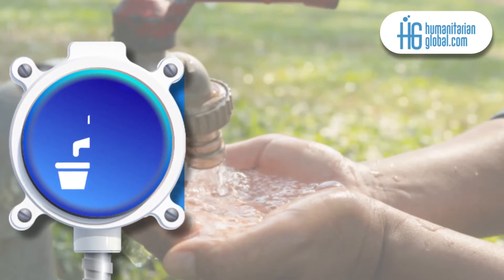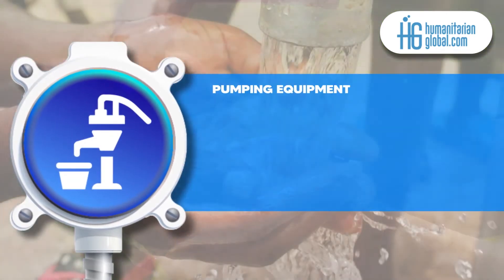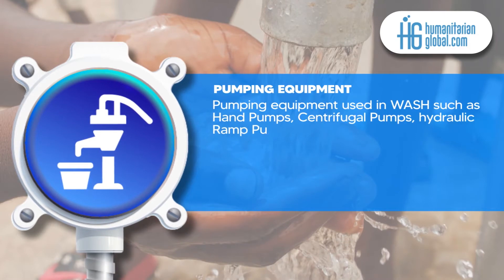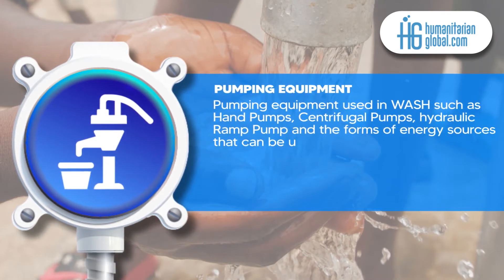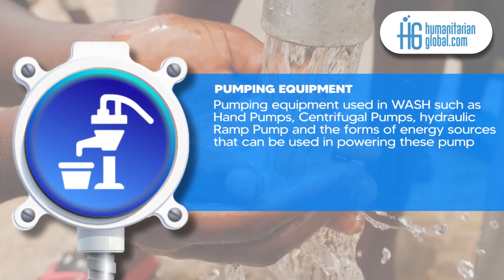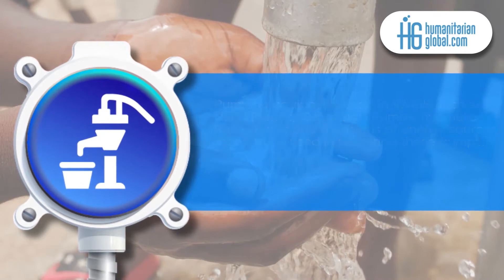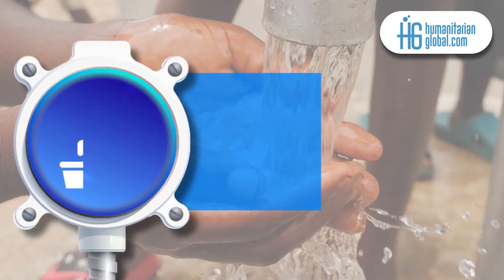Secondly, pumping equipment. This module will cover the various pumping equipment used in WASH such as hand pumps, centrifugal pumps, hydraulic ramp pump and the forms of energy sources that can be used in powering these pumps.